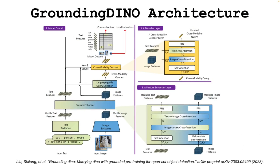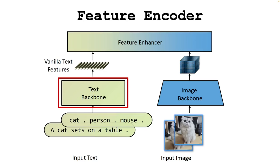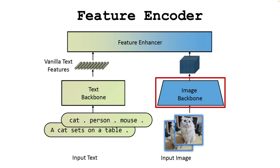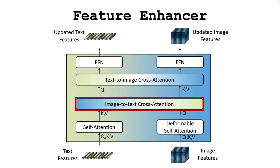Now let's dig into the Grounding DINO architecture. The first thing we can do is feed the model an image and the corresponding text query that describes what we want to find. Grounding DINO uses a text backbone, like BERT, to extract the textual features and an image backbone, like Swin Transformer, to extract the corresponding visual features. Those two features are then fed into a feature enhancer for cross-modality feature fusion, which combines the two features using the self-attention mechanism in two steps. The first step is image-to-text cross-attention, where the input query Q comes from the visual features and the keys K and values V come from the textual features.